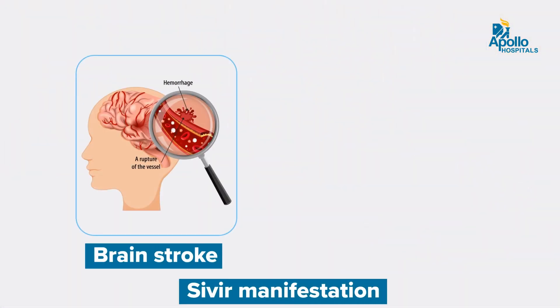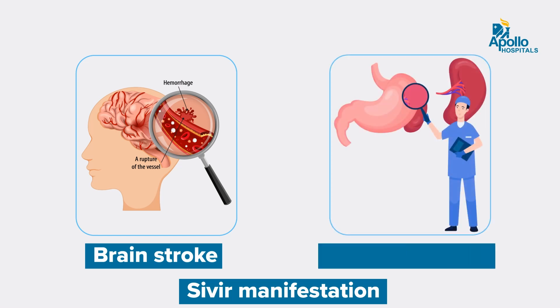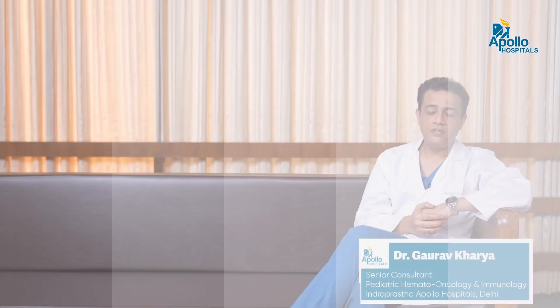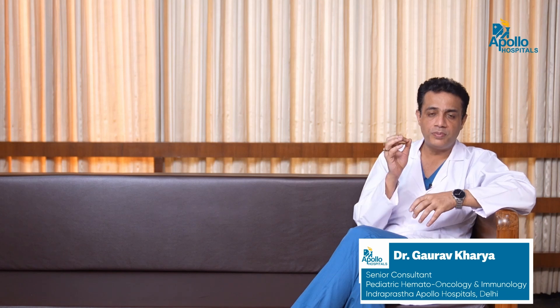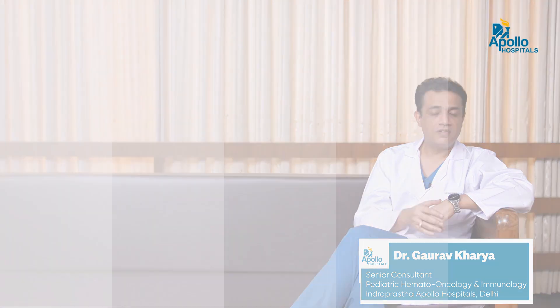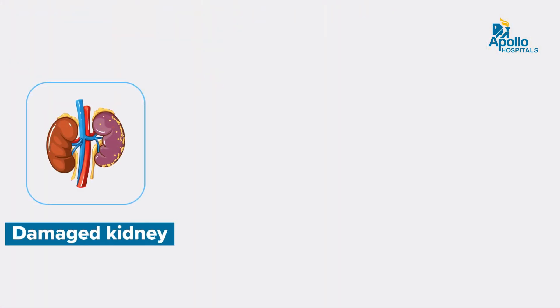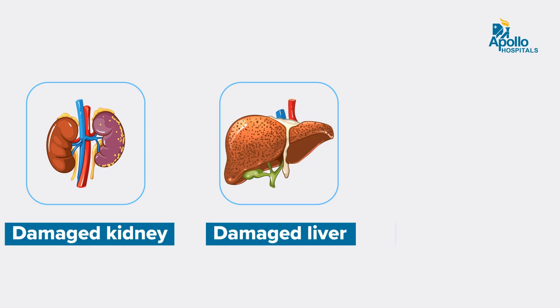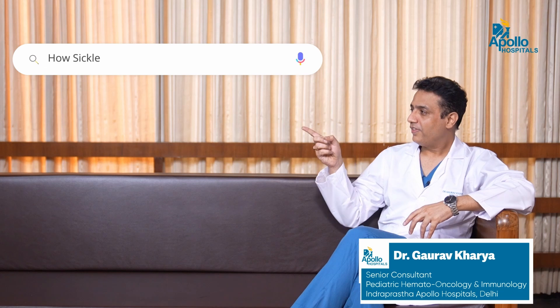Another important complication is stroke, which is a very important life-threatening or life-limiting complication in a child suffering from sickle cell disease. Another very important complication is splenic sequestration. These kids are also at risk of having aplastic crisis. There are myriad manifestations of sickle cell disease depending on which particular organ is primarily affected — some patients present with affected kidney, some with affected liver, some with affected brain, or with multi-system involvement.